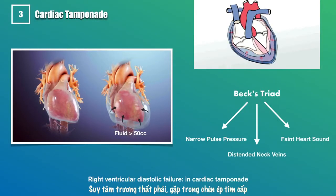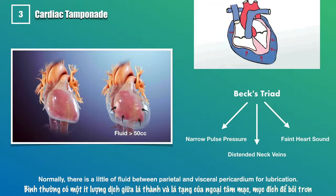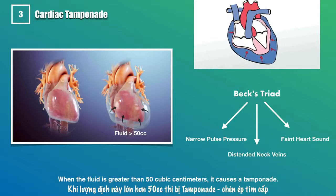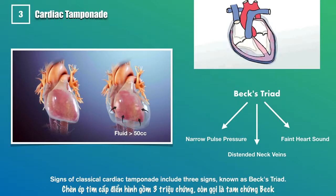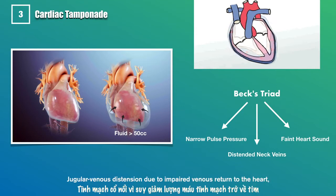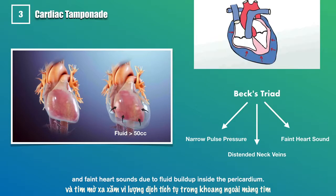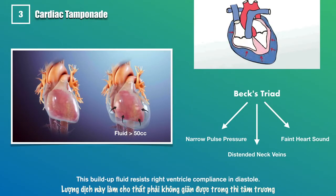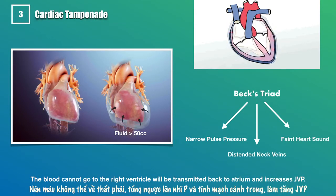Right ventricular diastolic failure in cardiac tamponade: normally there is a little fluid between the parietal and visceral pericardium for lubrication. When the fluid is greater than 50 cubic centimeters, it causes tamponade. Classic signs of cardiac tamponade — Beck's triad — include narrow pulse pressure due to decreased stroke volume, jugular venous distension due to impaired venous return, and faint heart sounds due to fluid buildup inside the pericardium. This buildup fluid resists right ventricle compliance in diastole, so blood cannot enter the right ventricle and is transmitted back to the right atrium, increasing JVP.